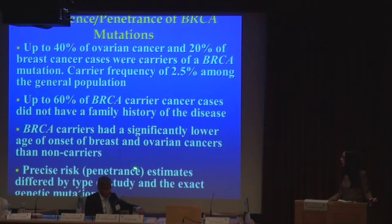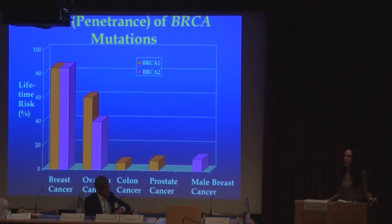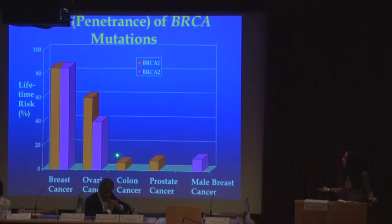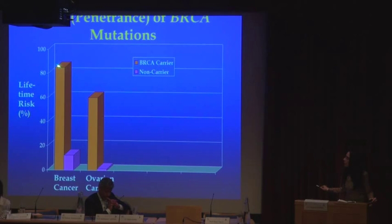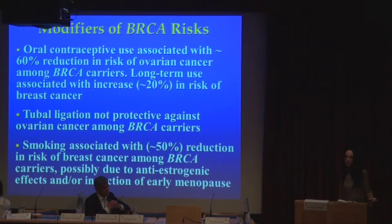The precise risk estimates for BRCA mutations differ by the type of study and the exact genetic mutation. The lifetime risk of BRCA mutations for breast cancer can reach as high as 85%, and for ovarian cancer as high as 60% by age 70. There are also risks of colorectal cancer, prostate cancer, and male breast cancer for carriers. To put this in perspective, the 85% risk is compared to a 12% lifetime breast cancer risk for an average woman, and the 60% ovarian cancer risk is compared to 1.4% in the general population — so these mutations confer very high risk.